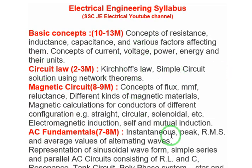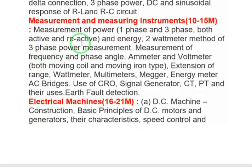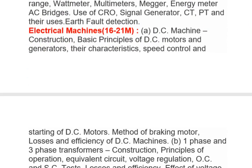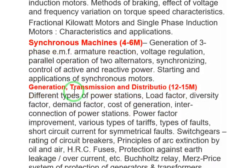To recap quickly: Basic Concepts, Circuit Laws, Magnetic Circuit, and AC Fundamentals all come under Electrical Circuits. Measurement and Measuring Instruments is a separate section. Electrical Machines covers DC machines, transformers, induction motors, and fractional kilowatt motors. Synchronous Machines is listed separately for additional weightage. Generation, Transmission, and Distribution is entirely a Power System topic.